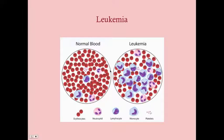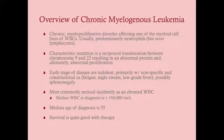Leukemia in general is an increase in production of a clonal line of cells. You may see this line of cells in the peripheral circulation. In chronic leukemia, you don't tend to see it to the same degree as in acute leukemia, but you may see immature cells on a peripheral smear. CML is a chronic myeloproliferative disorder affecting one of the myeloid lines — generally neutrophils, but never lymphocytes.